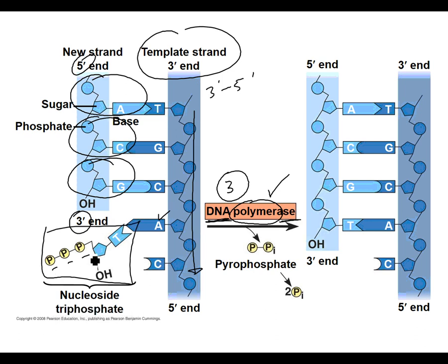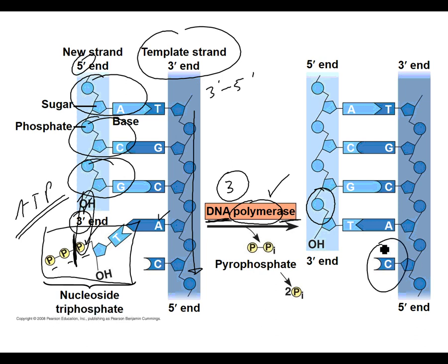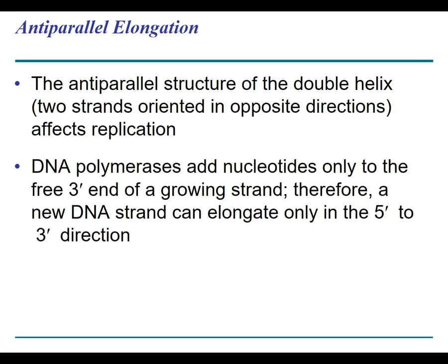The DNA polymerase has already brought in a complementary A, C, and G, and now it's bringing in a T for the A on the template. Notice there are three phosphates — this is an energy-requiring process, and cleaving off the last phosphate provides the energy to form the covalent bond between the phosphate and the oxygen in the backbone. The polymerase then moves on to the next base — reads a C and brings in the complementary guanine nucleotide. This also illustrates the anti-parallel nature of DNA and the specific directionality.